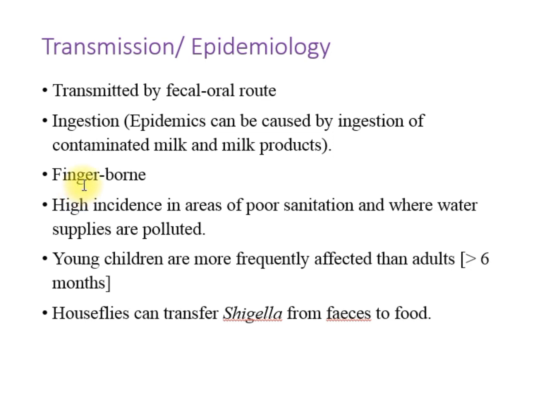Infection can also occur through fingers and hands. Since the bacteria is shed in the feces, if there is lack of personal hygiene — if the individual shedding the bacteria is not cleaning their hands and fingers after defecation and is handling food — they may transmit the bacteria to food items. Where there is poor sanitation and water polluted with sewage, there is a higher incidence of shigellosis.